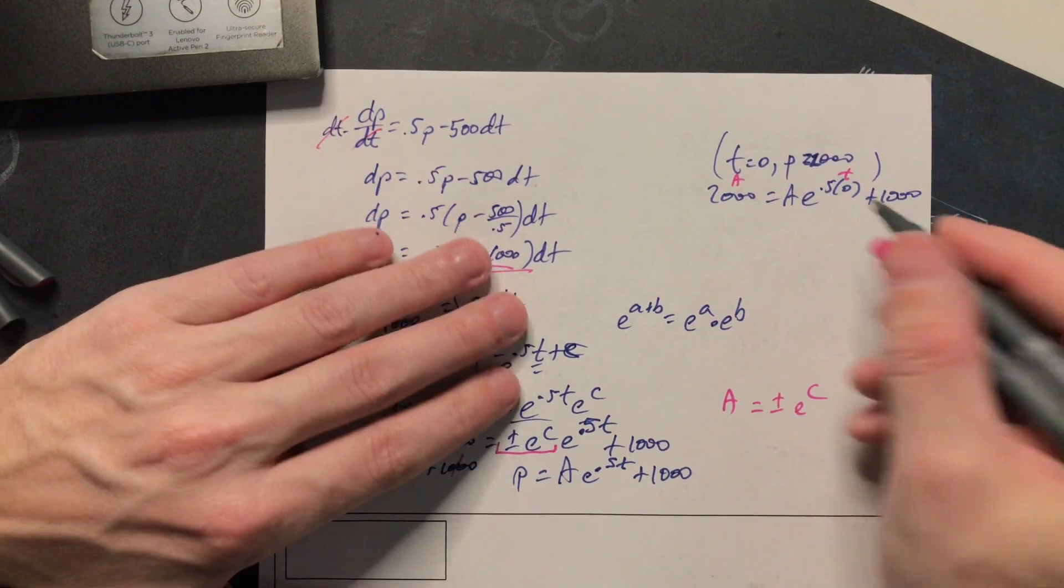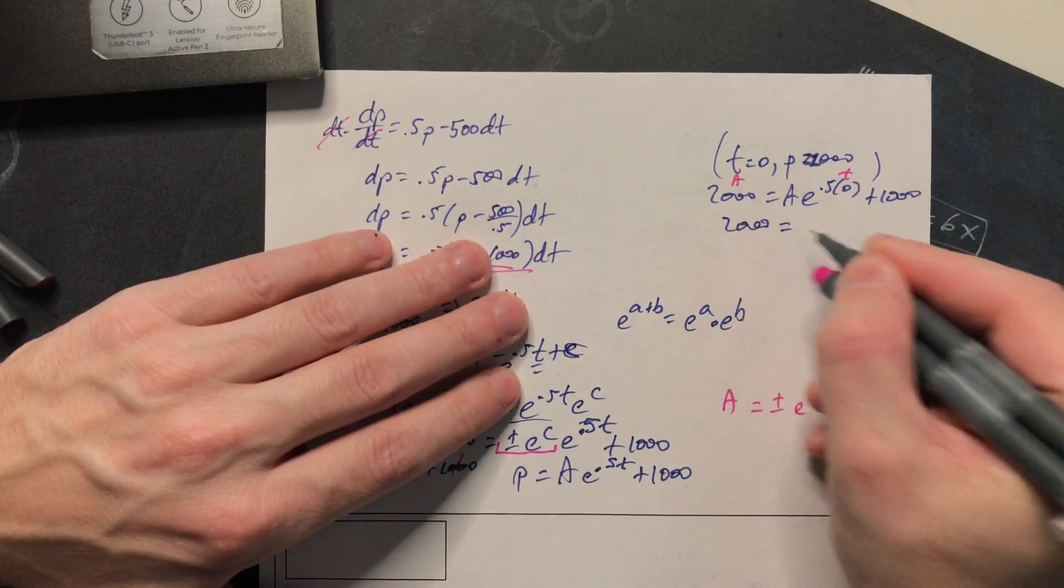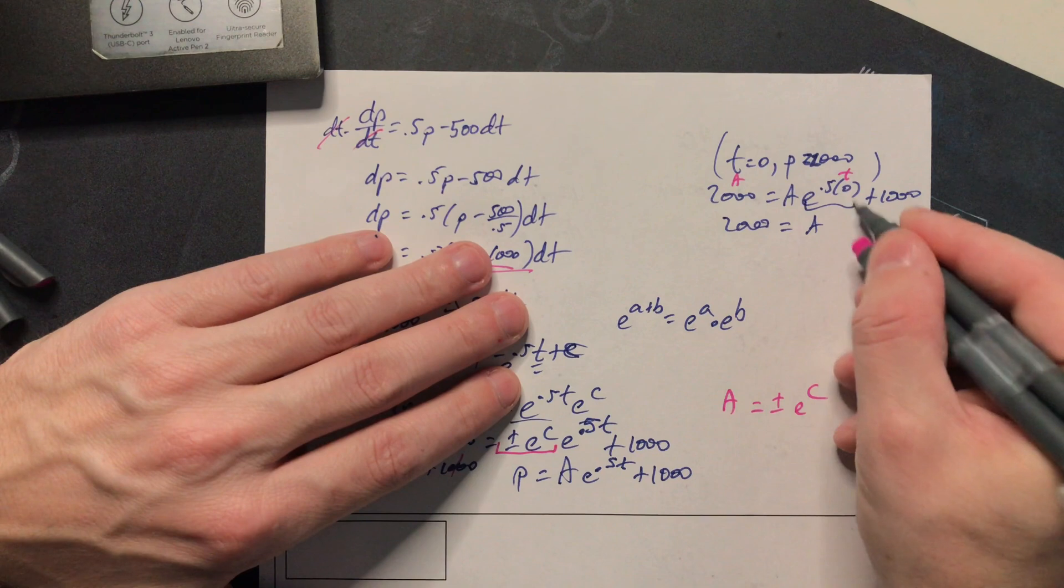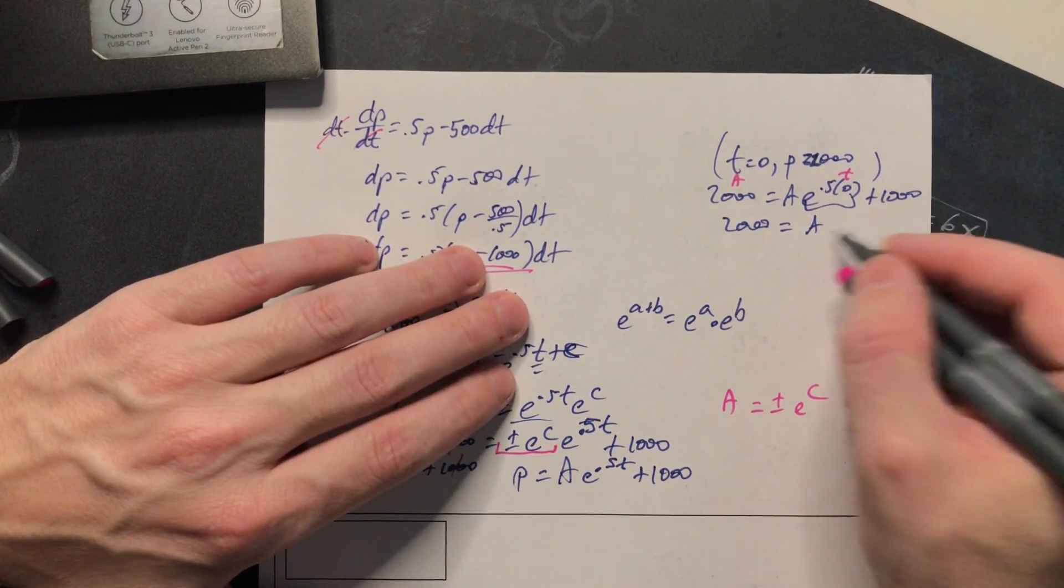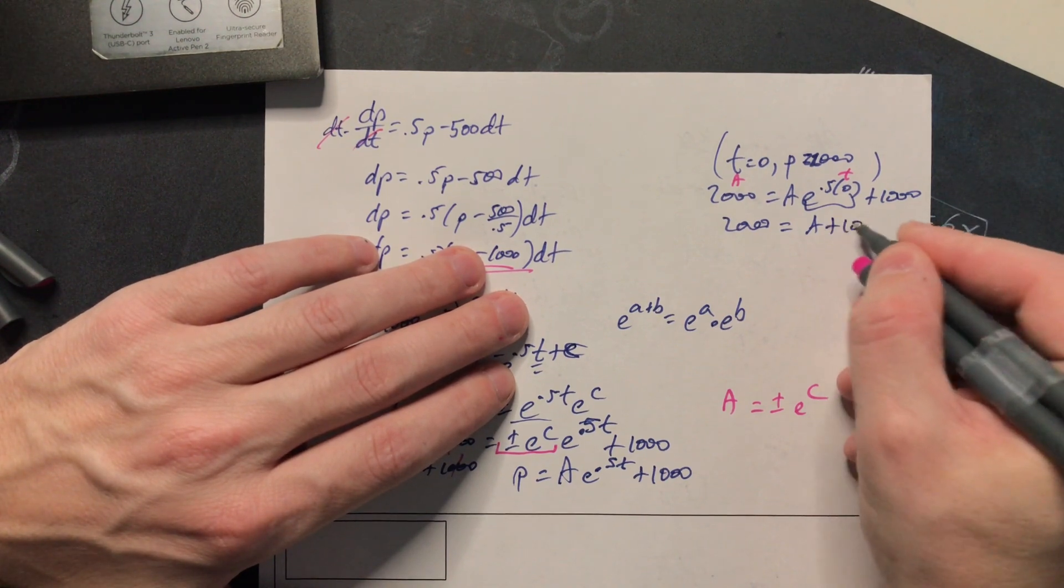And now it's going to be 2,000 is equal to a. This here is one because it's 0.5 times zero which is zero, e to the zero is one. So it's just a in other words plus the 1,000.